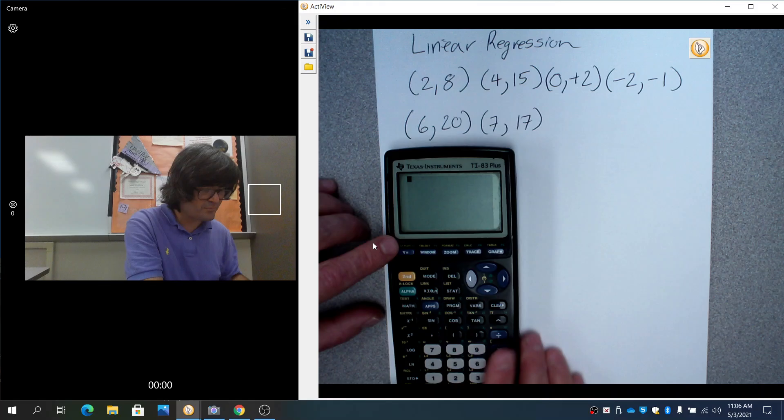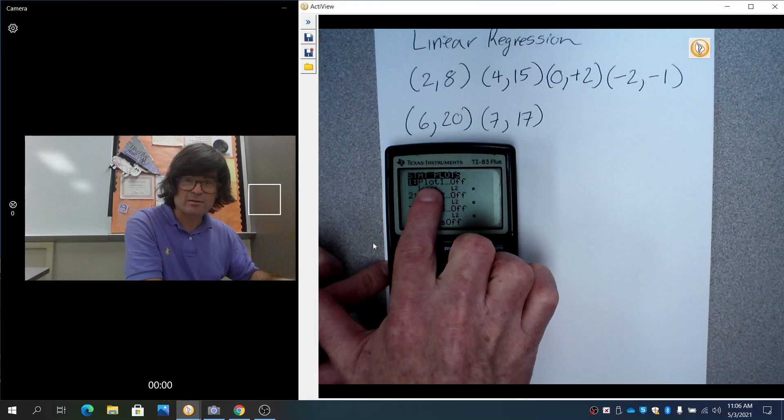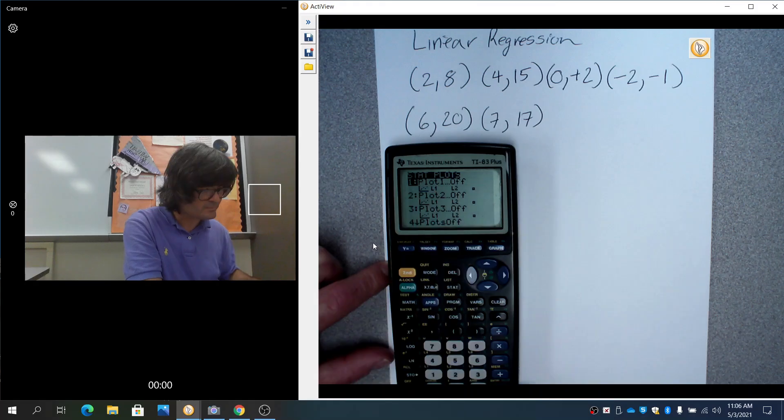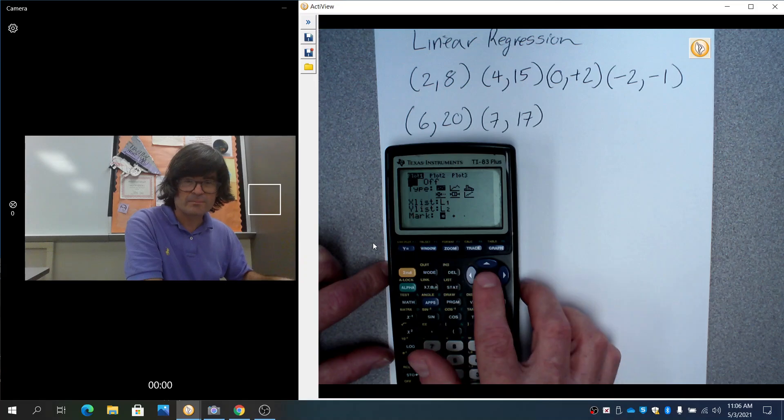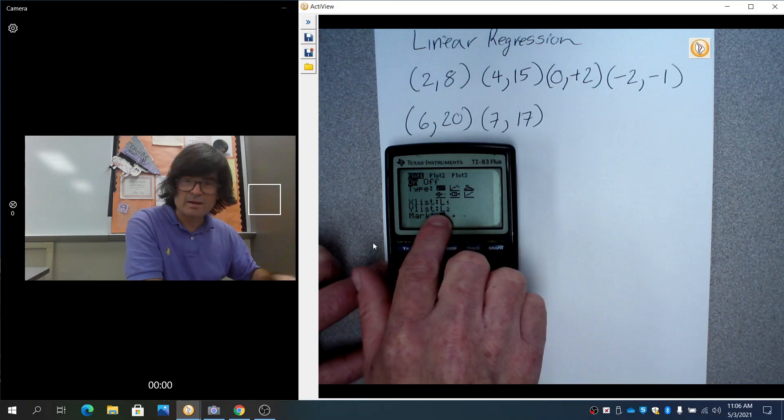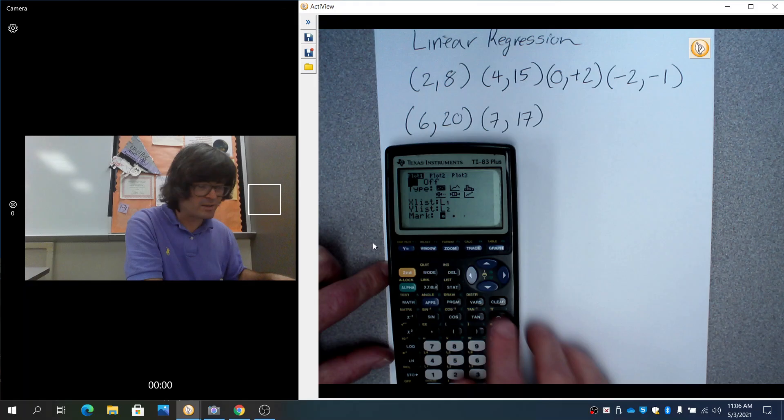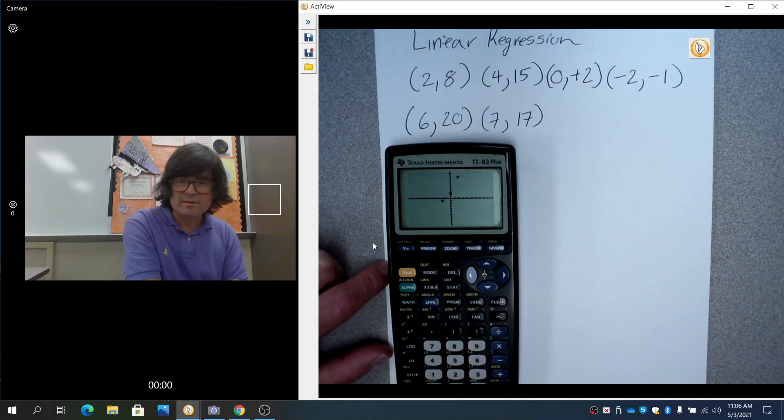Anyway, once you have your list, you're going to go to where it says STAT PLOT up above the Y= - second STAT PLOT. I'm going to just hit ENTER on that first plot. We're going to turn it on, and then we're going to see that x is list one, y is list two.